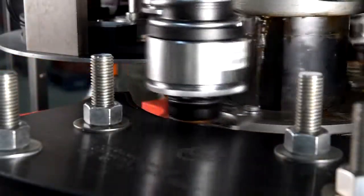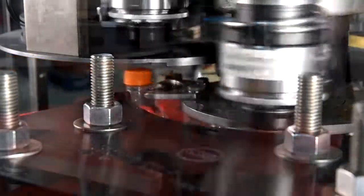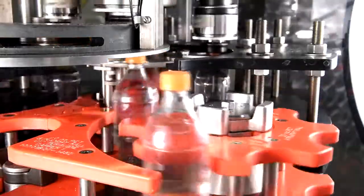As the bottle approaches the exit of the capping machine, the chuck lifts off the bottle so the bottle can exit the capper and the chuck heads back to the cap feed star to pick up another cap.